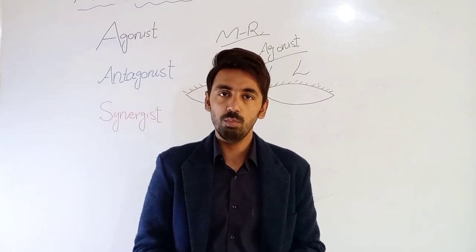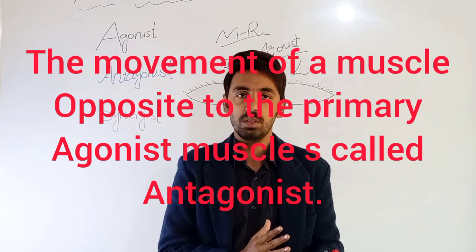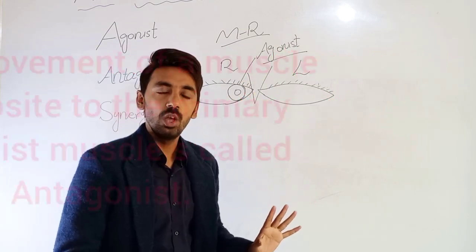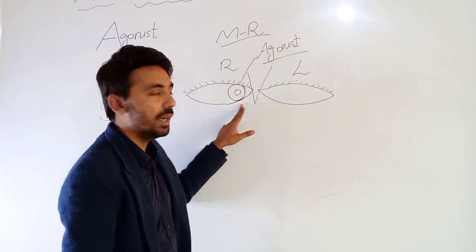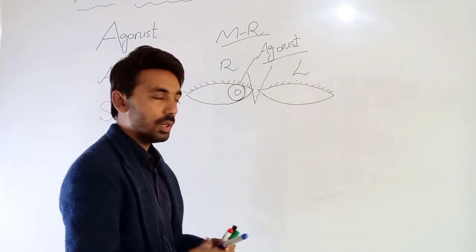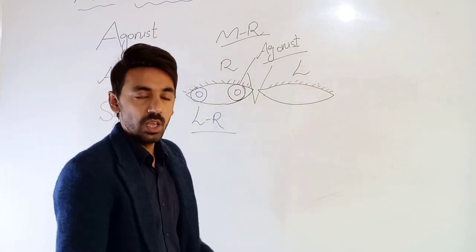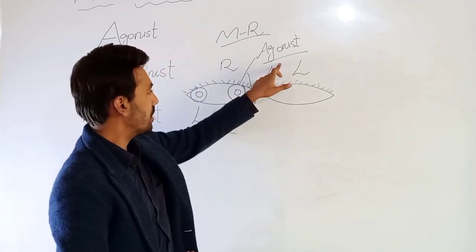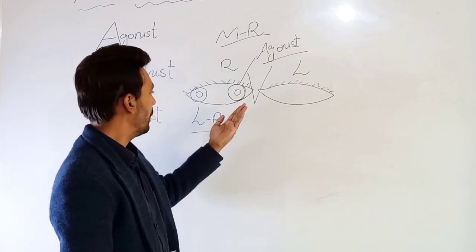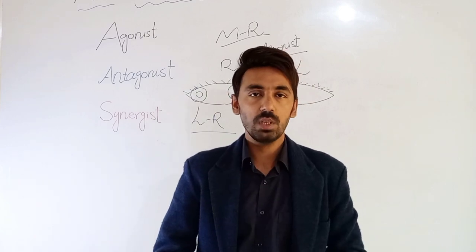The antagonist muscle movement is the movement of a muscle against or opposite to the agonist muscle. We have the agonist muscle which is the medial rectus. Now we have to find the muscle which will move against or opposite to the medial rectus — and that is the lateral rectus. If our agonist is moving towards the nose, the antagonist, which is the lateral rectus, will move in the opposite direction. This is called antagonist muscle movement.